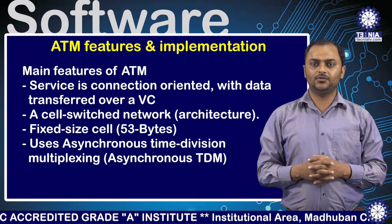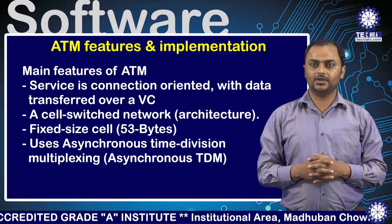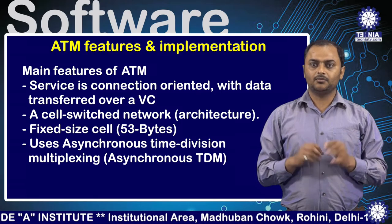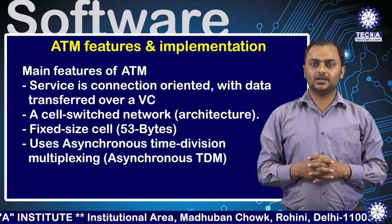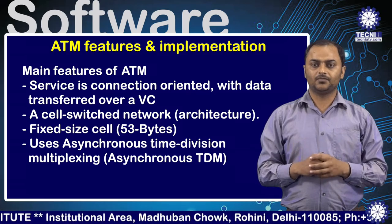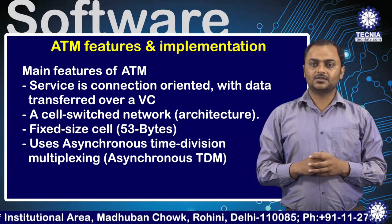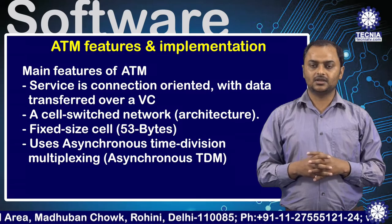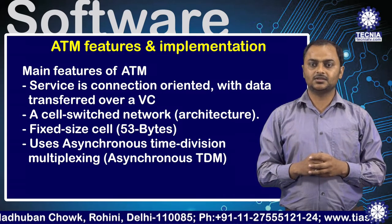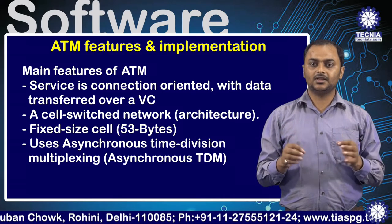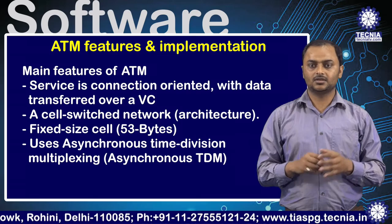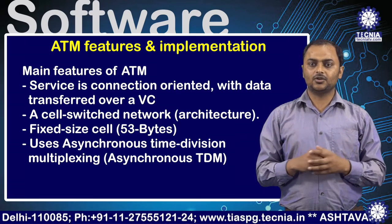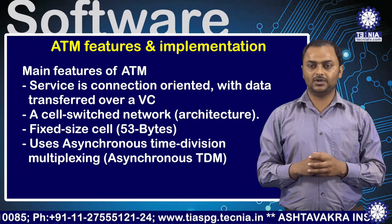Now we will discuss the main features of ATM. First, service is connection-oriented with data transfer over a virtual circuit. Second, it is a cell-switched network architecture. Third, it uses fixed-size cells of up to 53 bytes.